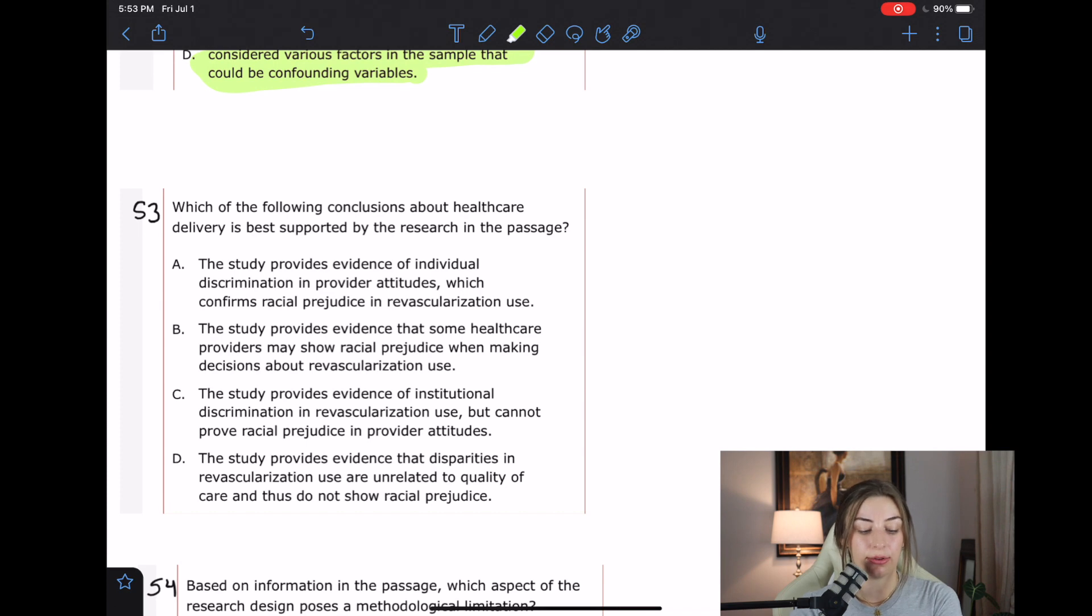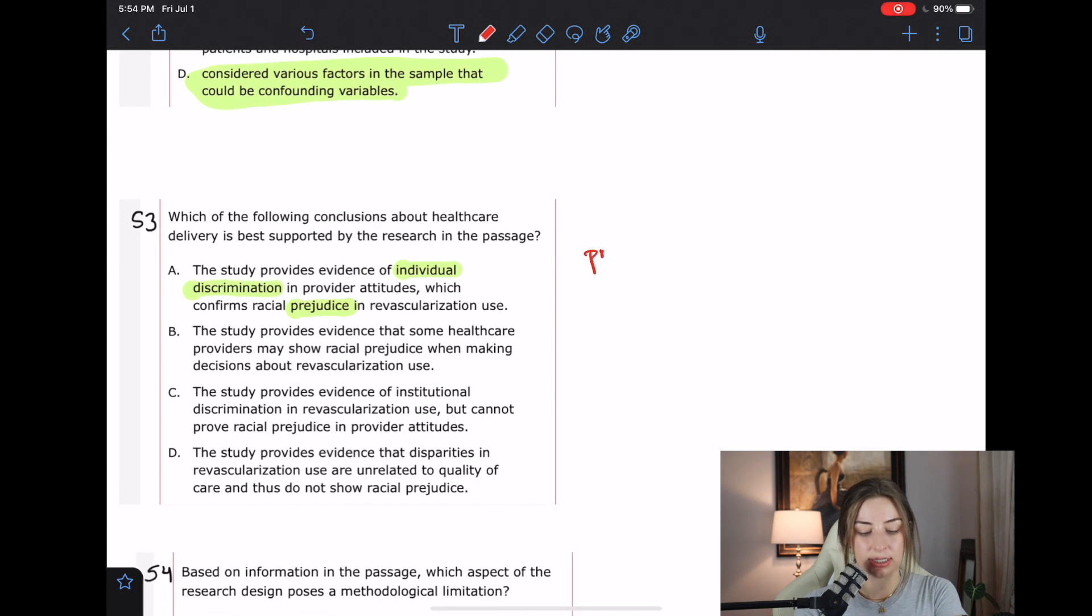53, which of the following conclusions about healthcare delivery is best supported by the research in the passage. A says the study provides evidence of individual discrimination and provider attitudes, which confirms racial prejudice in revascularization use. So I see a couple of terms that are sticking out to me, individual discrimination and prejudice. Prejudice is all about attitudes, not behaviors.